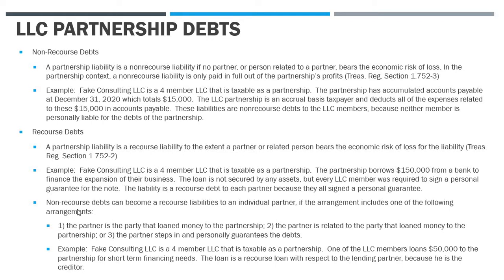Non-recourse debts can become recourse to an individual partner if the arrangement includes one of the following: a partner loans money to the partnership — that's recourse debt to that partner because they bear the risk of loss; the partner is related to the party that loaned the money; or a partner steps in and guarantees the debt, which can also make it recourse.